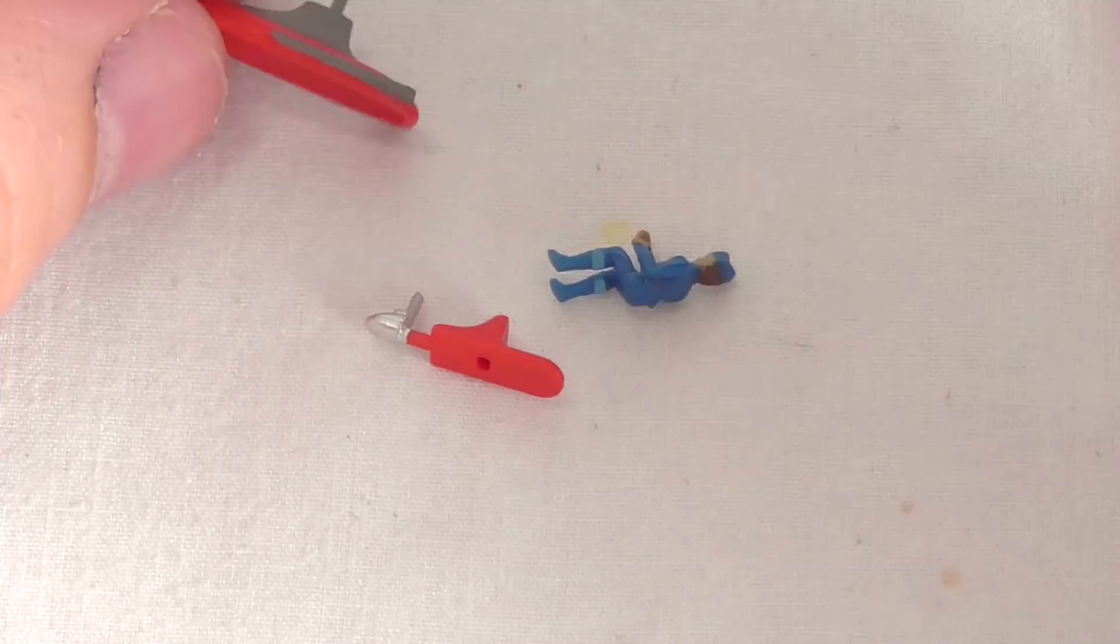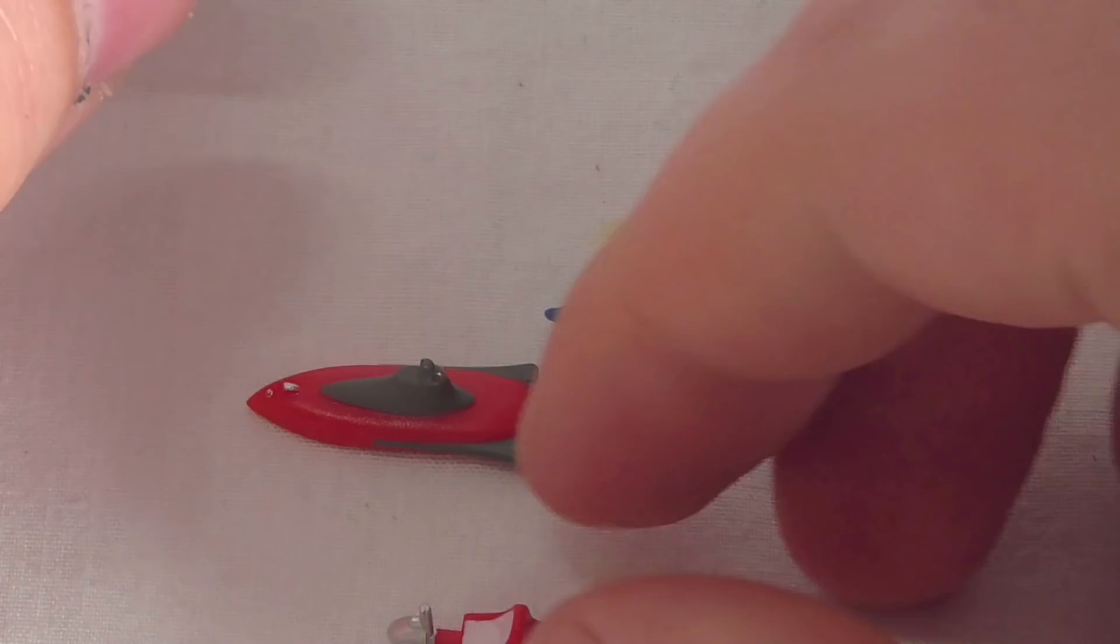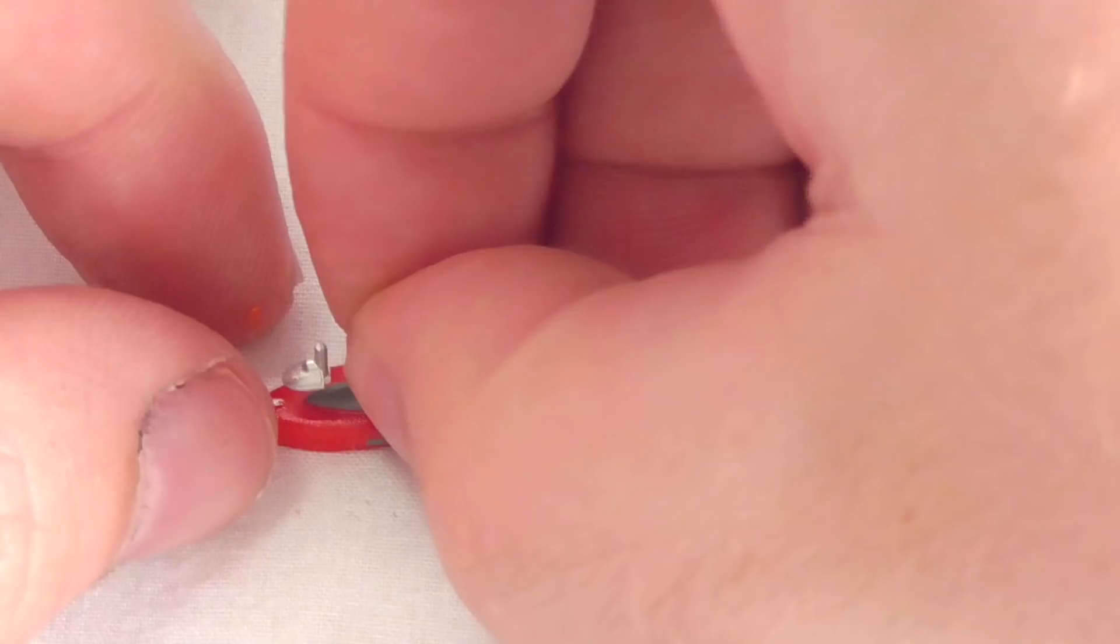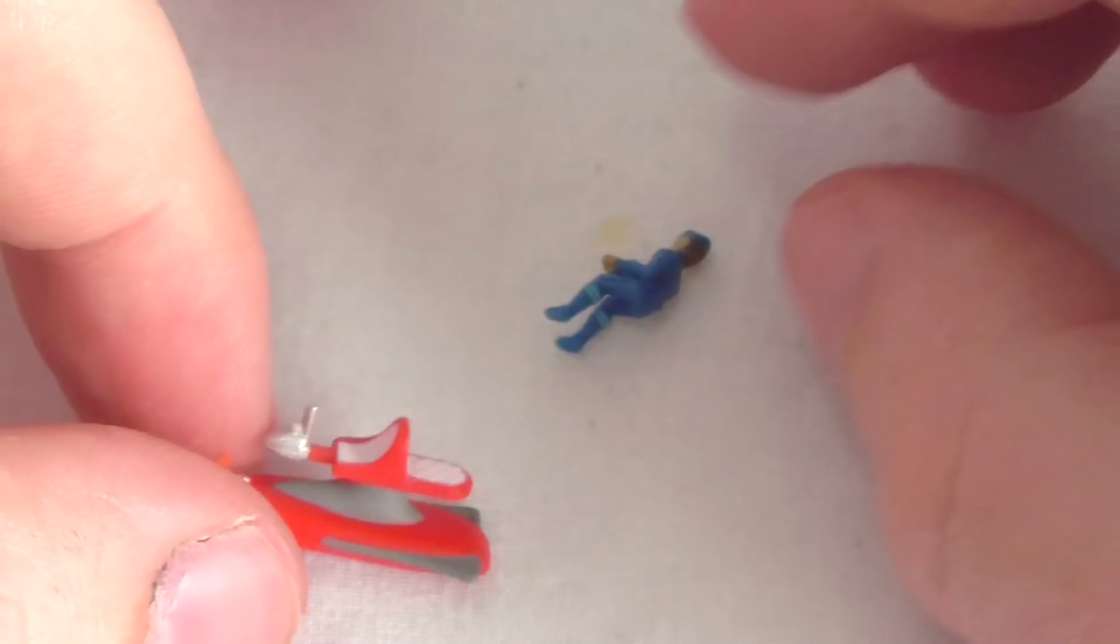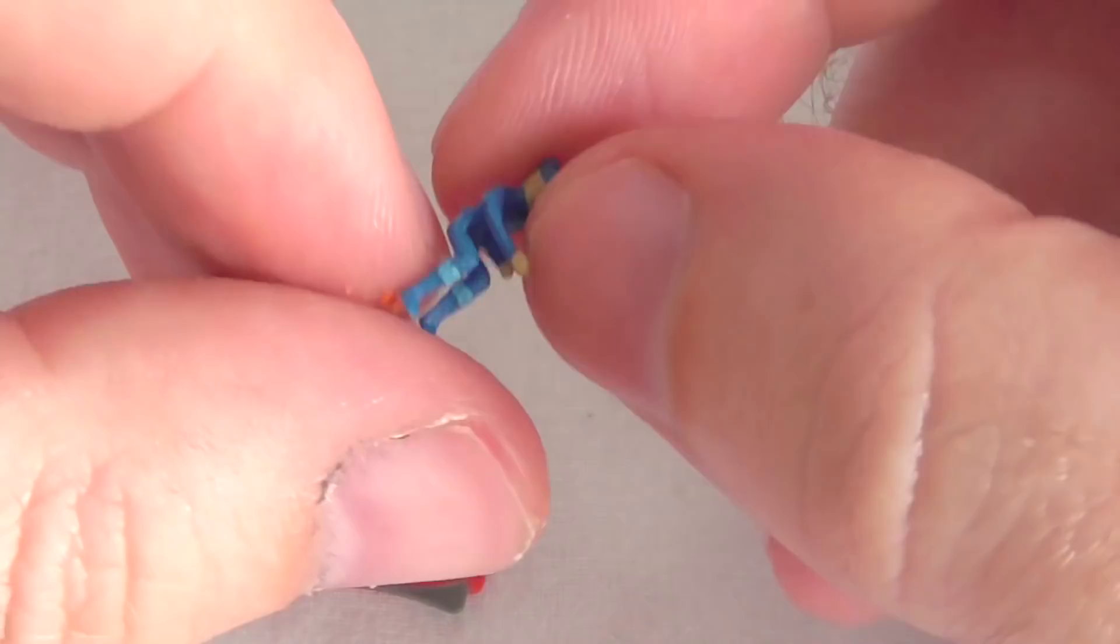And then we get the little seat which has texturing on the quilted parts at the back which is pretty awesome. We just pop that together there. Make sure they are level. And then we just pop little Scott Tracy on the hover bike there. And that is that hover bike all done.